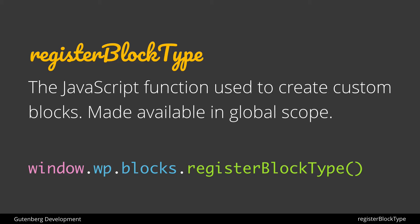wp is a globally available WordPress object that contains a whole lot of helpful libraries. We've already looked in this course at the blocks library, which contains helpful functions for creating blocks as well as components to help us build blocks — and then finally the registerBlockType function, which is what we're looking at here.